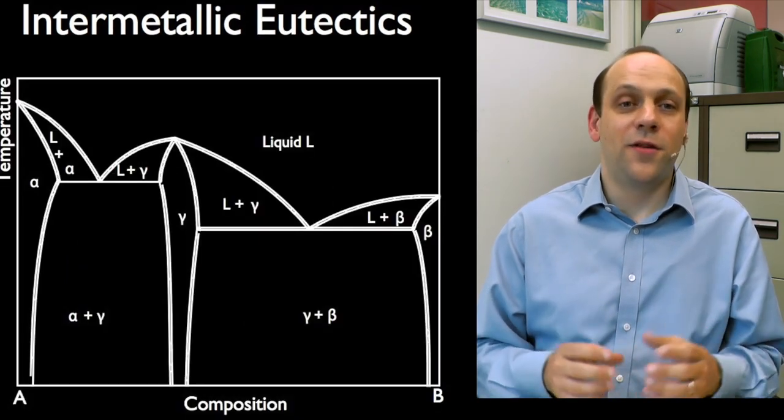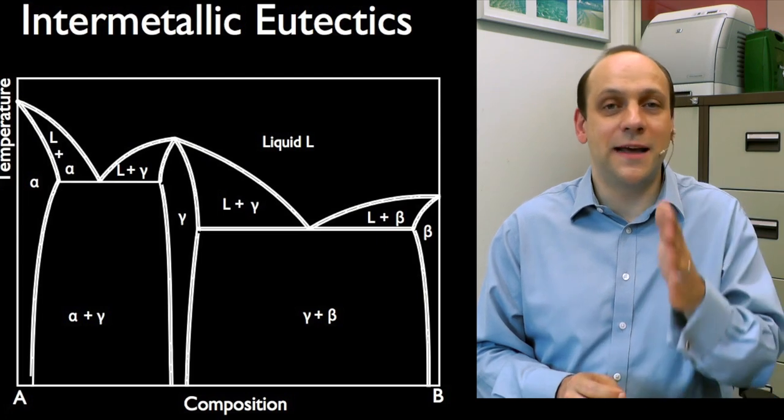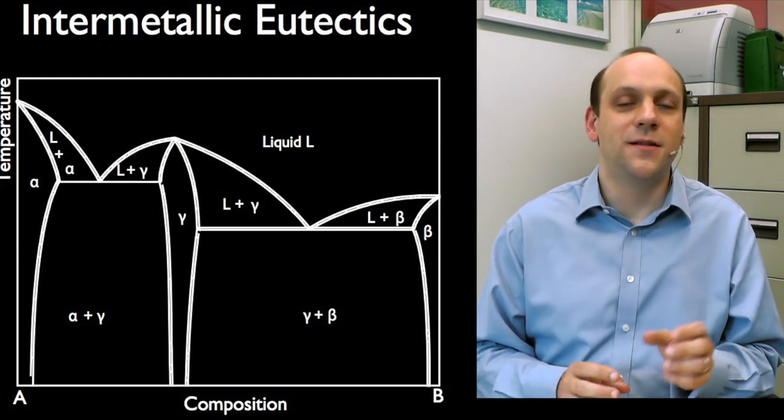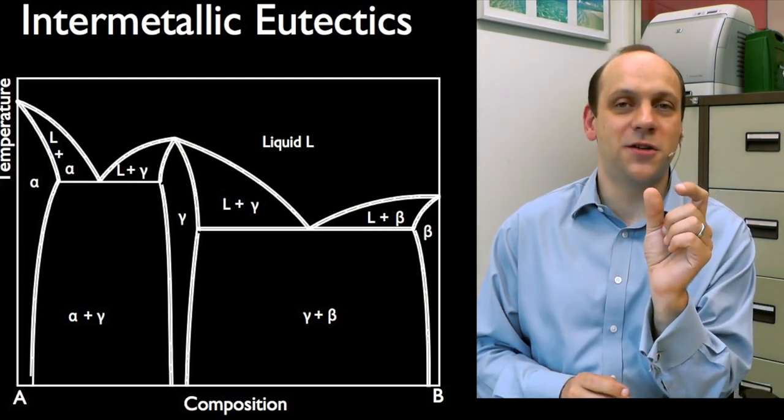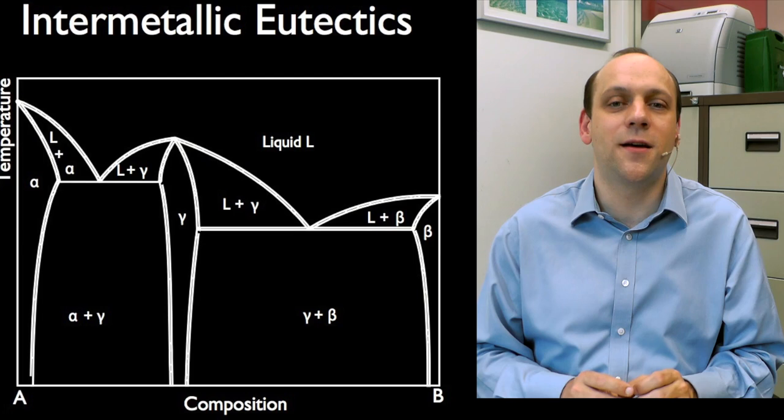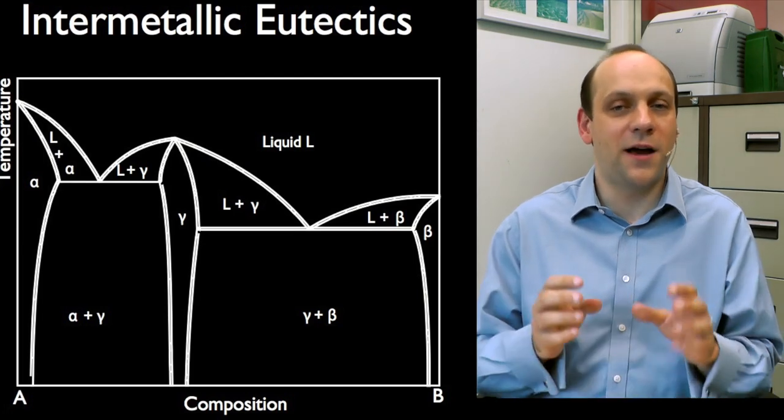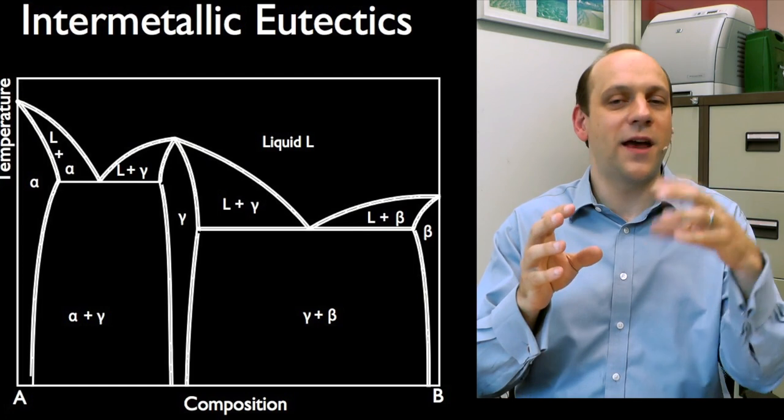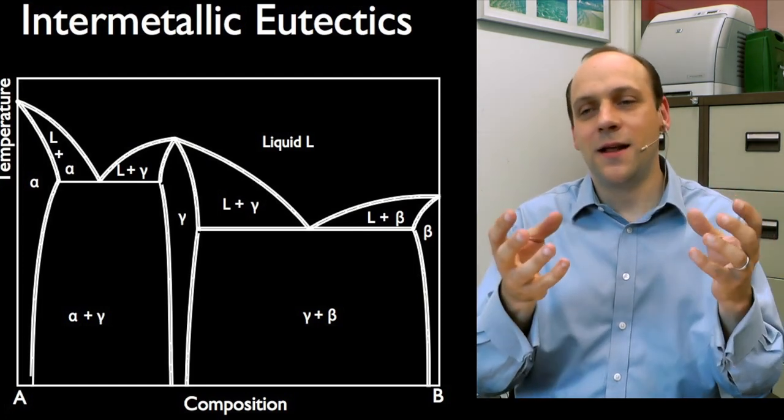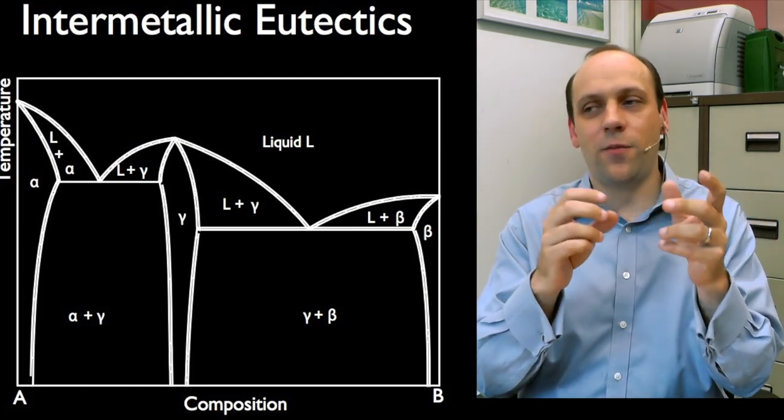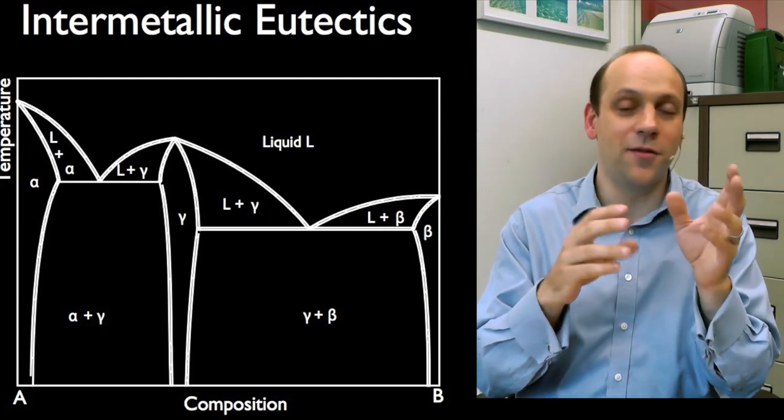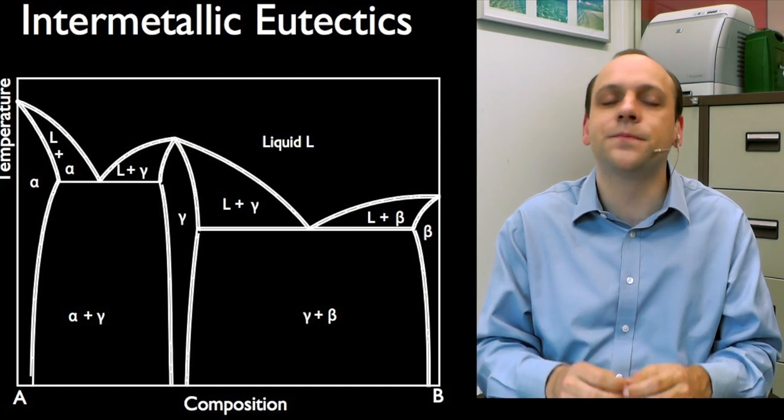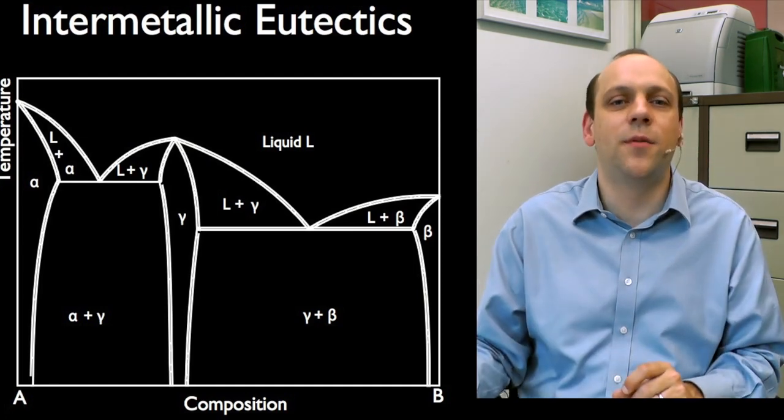So here's an example of what that sort of phase diagram might look like, where we've got an intermetallic gamma phase with some solubility, some range of solubility it can take up. So it's intermetallic where its composition has a little bit of range that it can take up. So if the compound was a crystal lattice with a set of A sites and a set of B sites, there would be some solubility for B on the A sites and possibly A on the B sites, or at least one of those two. So there would be some range of compositions it could take up.